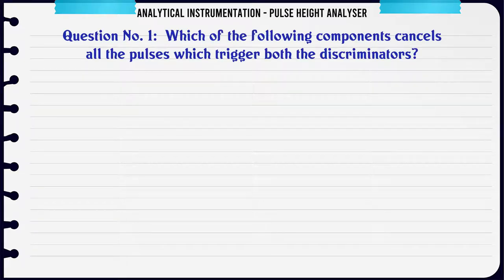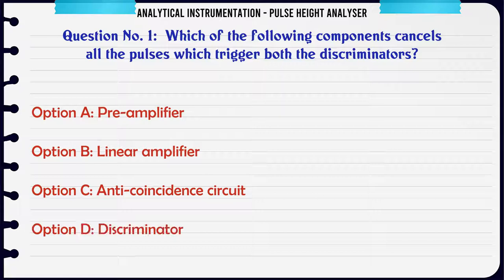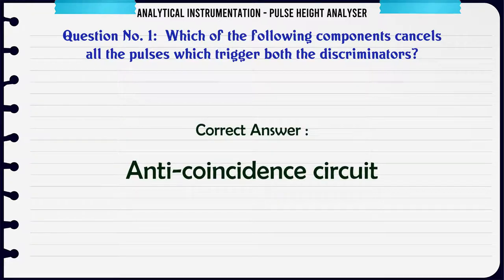Which of the following components cancels all the pulses which trigger both the discriminators? A. Pre-amplifier. B. Linear amplifier. C. Anticoincidence circuit. D. Discriminator. The correct answer is: Anticoincidence circuit.